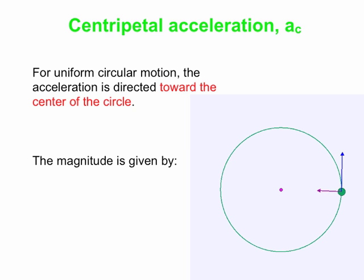Here are some other things we can talk about for uniform circular motion. The path is obviously a circle, characterized by a radius R and circumference — the distance once around — which is 2πR. Uniform means motion at constant speed. That speed is distance over time: if we take the full distance once around, that's 2πR, divided by capital T — the period — which is the time to go once around the circle.